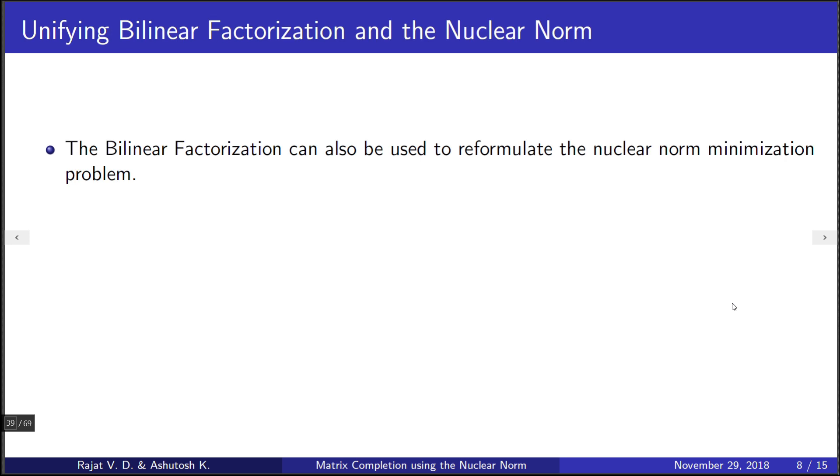Consider the initial problem that minimizes the nuclear norm as follows. Now consider another problem that minimizes the Frobenius norms of the fat and tall matrices L and R over k as well. Surprisingly, the two problems are equivalent.